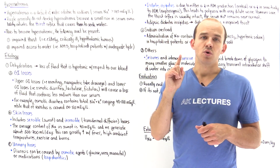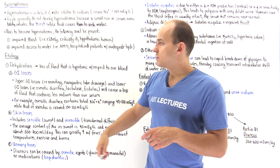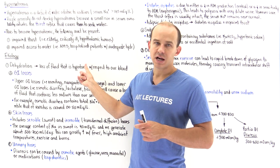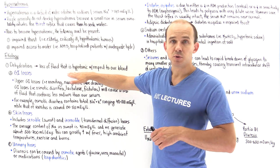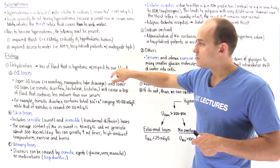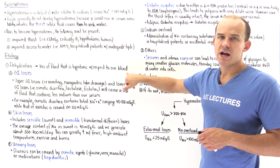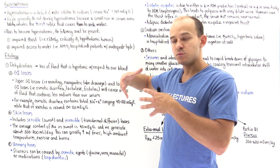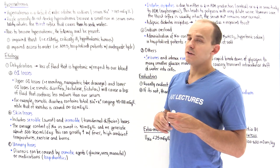The number one cause of hypernatremia is dehydration — the loss of fluid from the body that is hypotonic with respect to our blood. Hypotonic with respect to our blood means the sodium plus potassium levels in this fluid are less than in the blood. If we lose hypotonic fluid, we gain a deficit in free water, which is why hypernatremia is a deficit of free water relative to sodium.